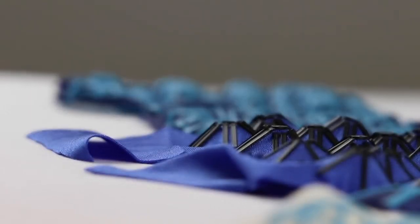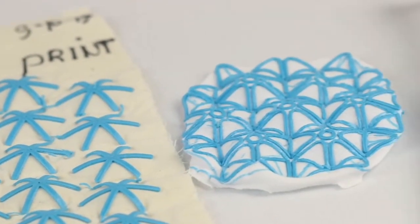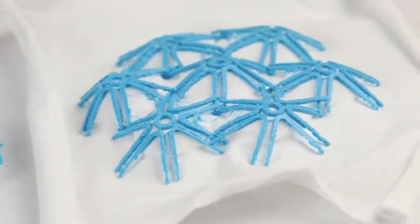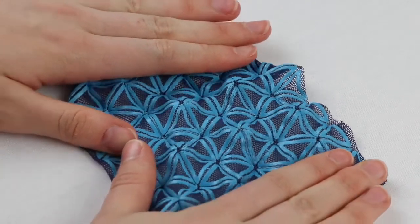3D printing on stretched fabrics creates dynamic 3D shapes, which we explored to develop a series of buttons. They print flat and transform as the fabric destretches.